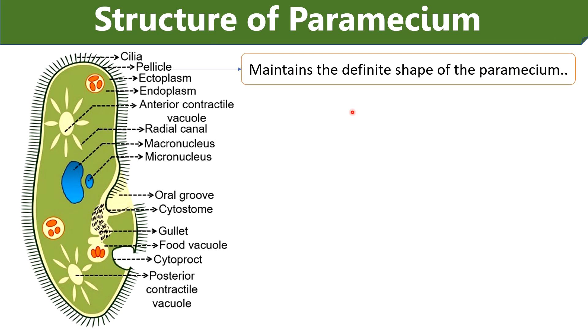Pellicle: Pellicle is a stiff and elastic membrane surrounding the paramecium body. It consists of a gelatinous substance and maintains the definite shape of paramecium.